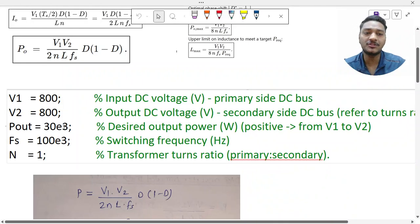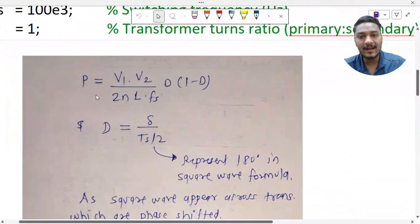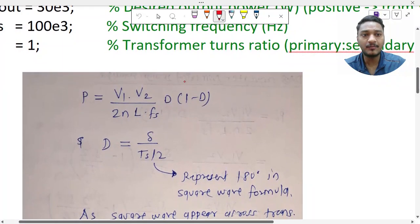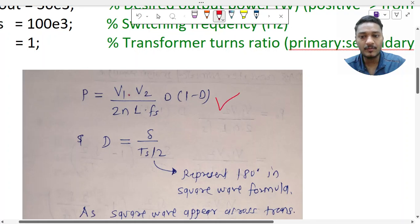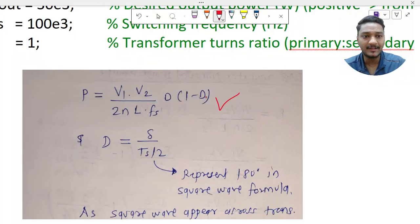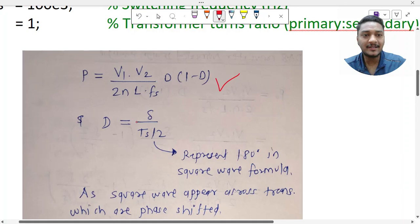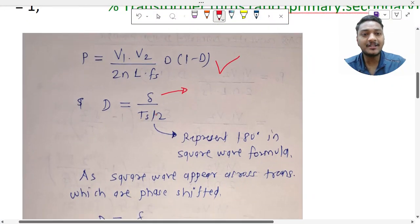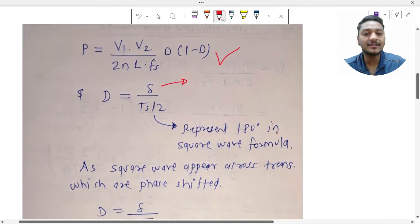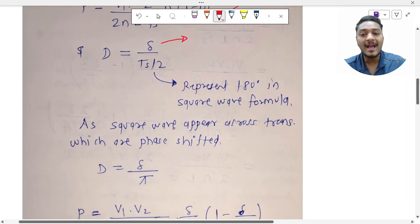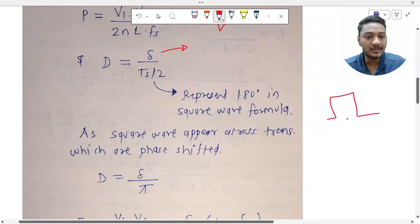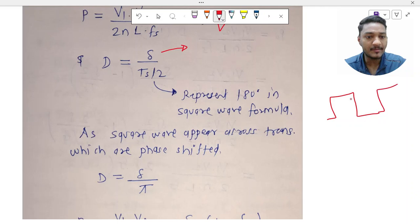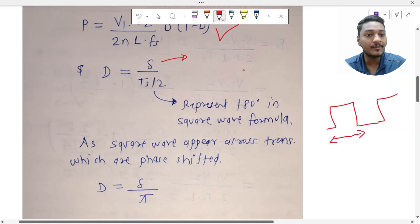With these given requirements, how do we proceed? We have the power expression: P = V1·V2 / (2·n·L·fs) · d·(1−d), where d = Δ/(Ts/2) and Δ is the phase shifting angle. The term Ts/2 represents 180 degrees, because the square waves appearing across the transformer are phase shifted and have 50% on, 50% off duty, so Ts/2 is 180 degrees.